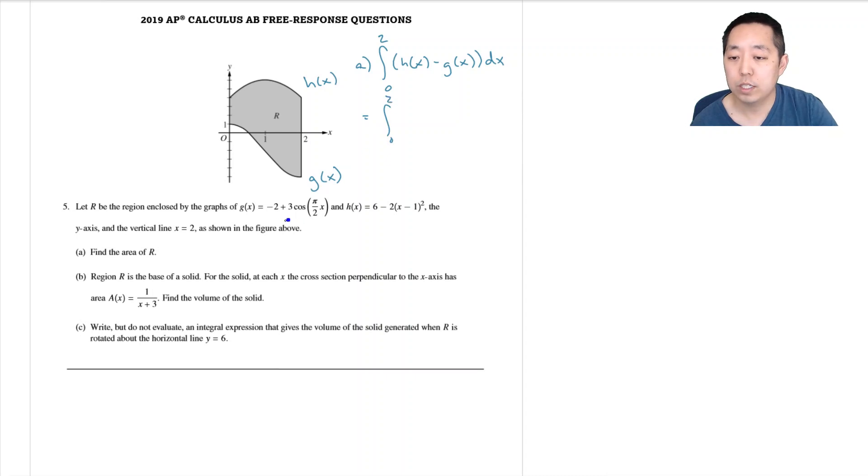This is going to be integral 0 to 2, H of X is this, so I'm going to do 6 minus 2 X minus 1 squared minus, minus 2 plus 3 cosine pi over 2 X.